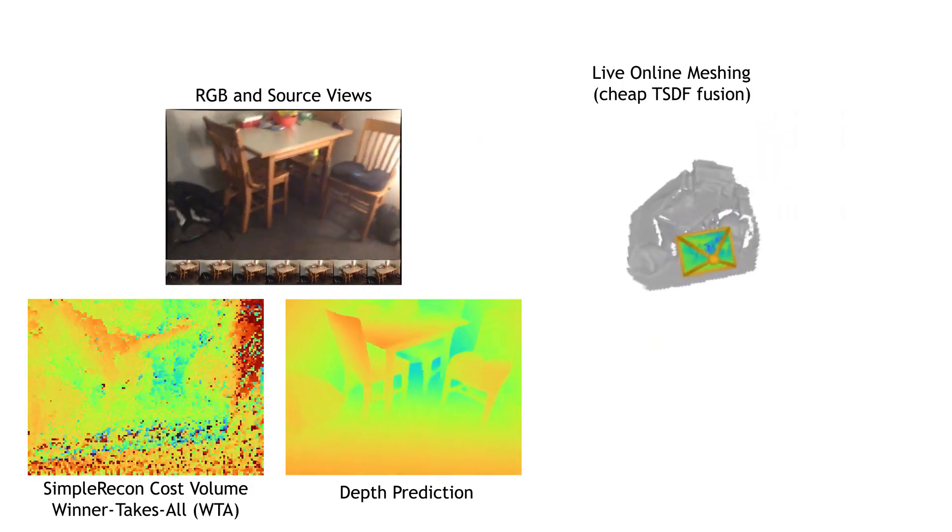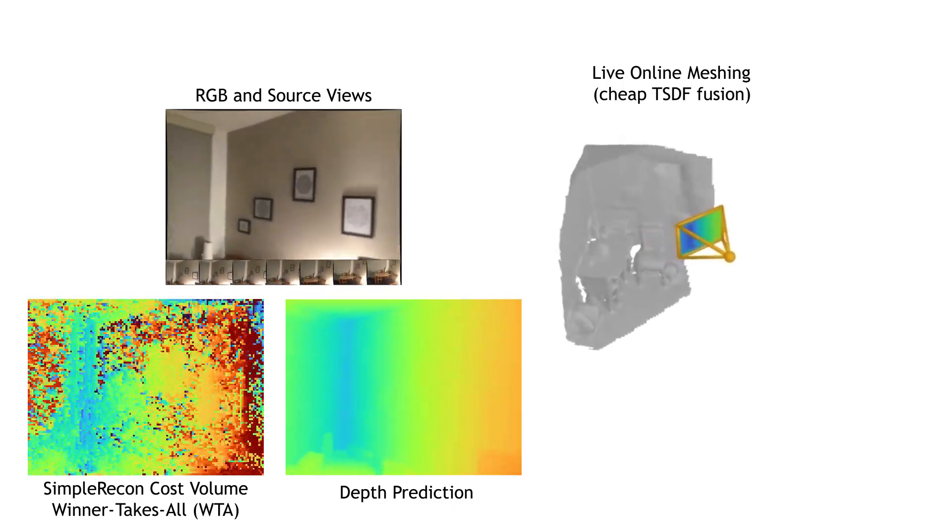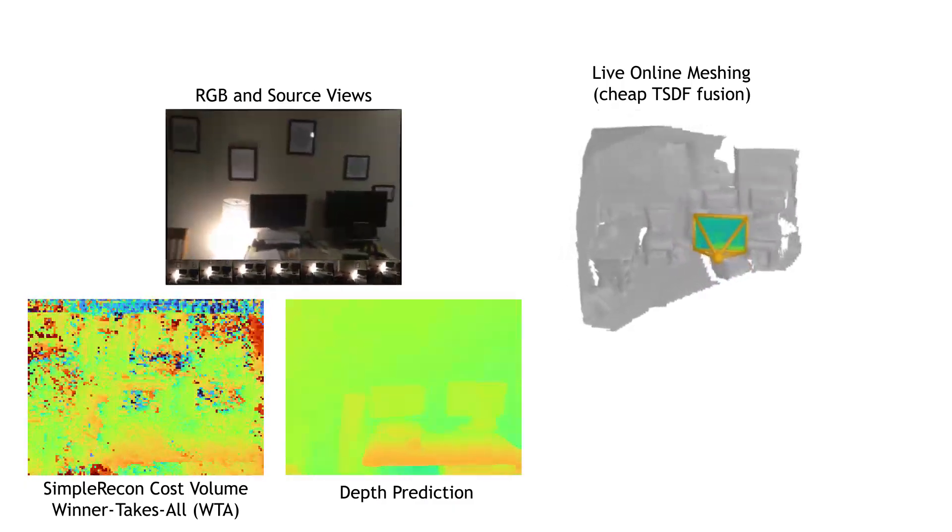Hash-TSDF fusion already provides a computationally inexpensive way of aggregating multiple depth estimates into global geometry, that's then easily accessible via marching cubes as a mesh. What if we could use this cheaply available global geometry we've built so far as part of our current depth prediction?